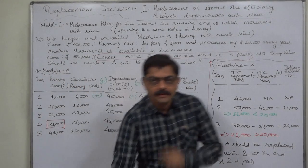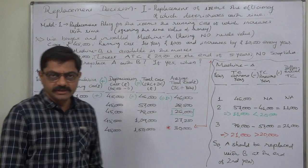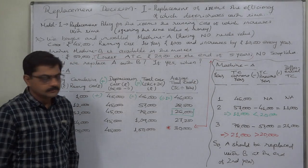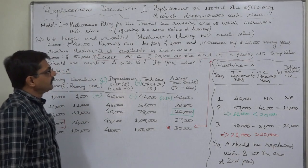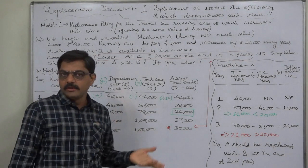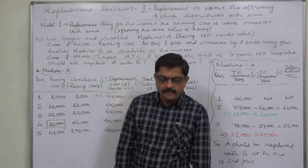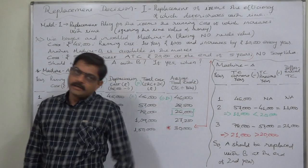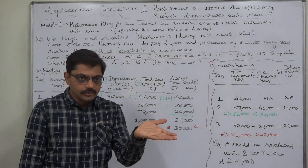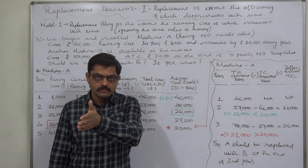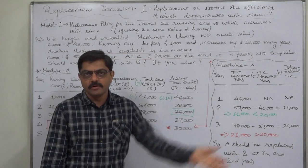Hello and welcome. Let us consider some interesting points in replacement decisions. The focus is on replacement of items whose efficiency deteriorates with time. For a high-value asset, efficiency decreases and running cost increases over time. This involves a comparative study between two machines and the possibility of substitution — whether use of one machine already installed should be discontinued in favor of the other.